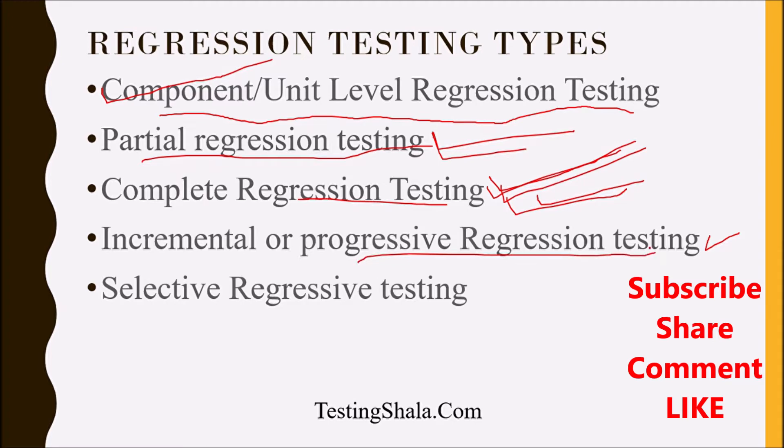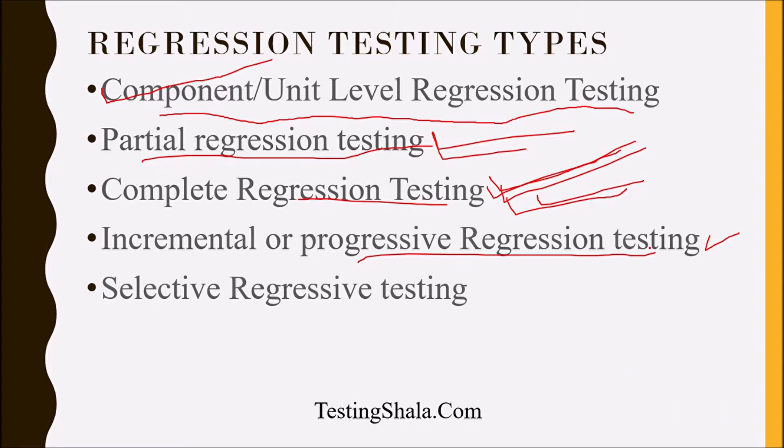The fourth type is incremental or progressive regression testing. This is done when there are changes to the existing code plus new code being added. We add new regression test cases and run both existing and new regression test cases together to ensure nothing is breaking.